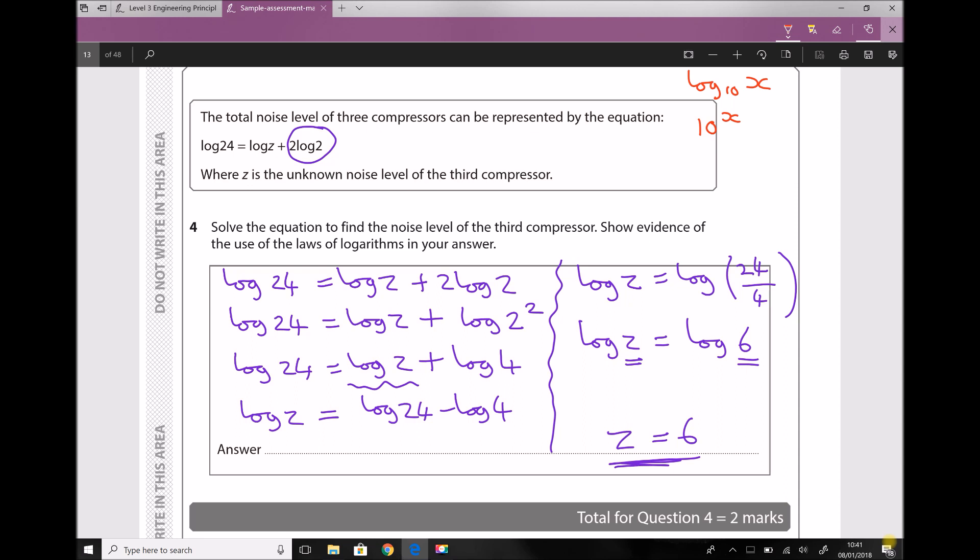What we can do is rearrange our original expression that states log 24 equals log z plus 2 log 2, and we can rearrange it so it appears in the form log z equals log 24 minus 2 log 2. Now log 24 minus 2 log 2 is just a number. Therefore, log z when we solve that in our calculator is 0.7782, accurate to four decimal places.